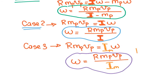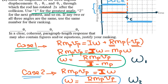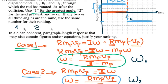Since I_new (with the puck's mass) is greater than I (rod alone), which is in turn greater than (I − m_p), the angular velocity ω in Case 1 is the largest, Case 2 is smaller, and Case 3 is the smallest. So the ranking of angular displacements is: Case 1 = 1 (greatest), Case 2 = 2, Case 3 = 3.